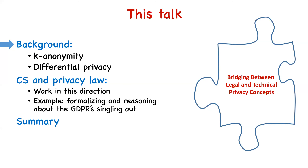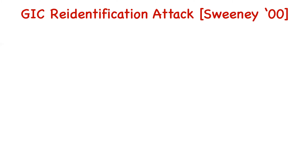This talk has three parts, not equally sized. First, a short background introducing k-anonymity and differential privacy and the motivation behind them. Then I'll briefly discuss computer science and privacy law and some work done in that direction. Finally, with more depth, I'll dive into our work formalizing a concept from the GDPR called 'singling out,' reason about it, and try to derive legal theorems of privacy.